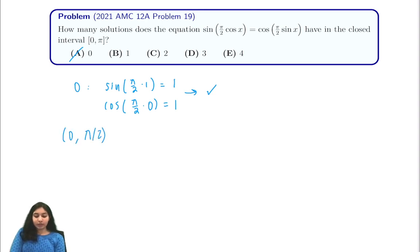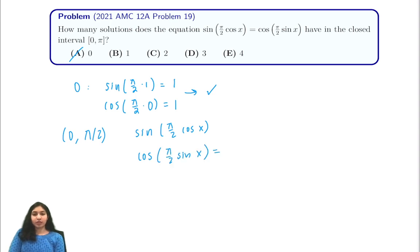Now let's look at the interval zero to π/2. In this interval we have sine of (π/2 · cos x) and cosine of (π/2 · sin x). We can rewrite the cosine expression as sine of (π/2 − π/2 · sin x).